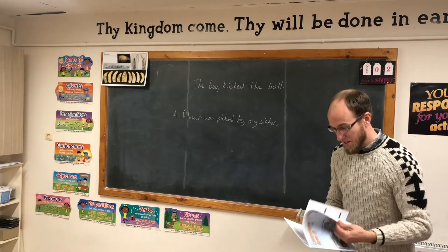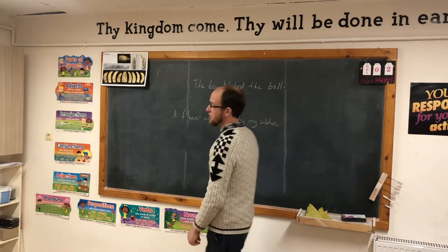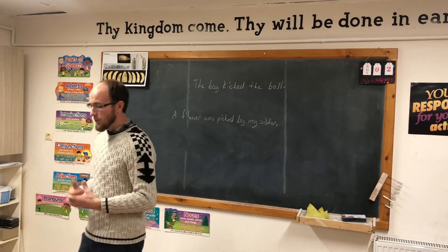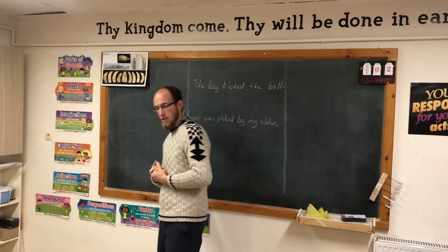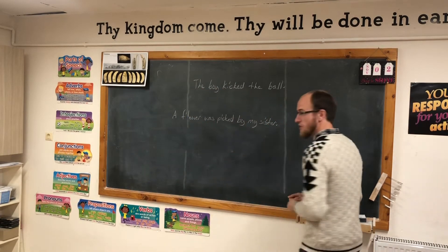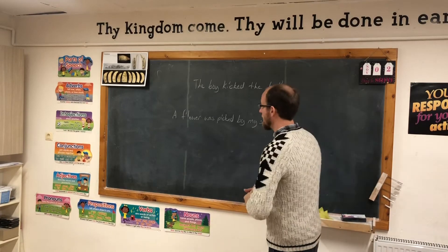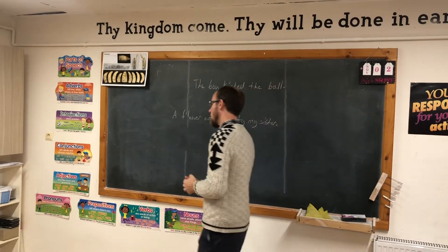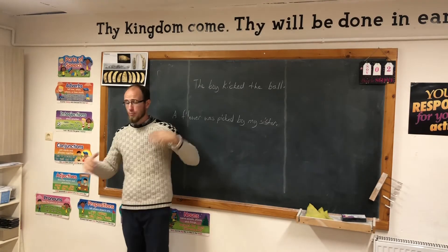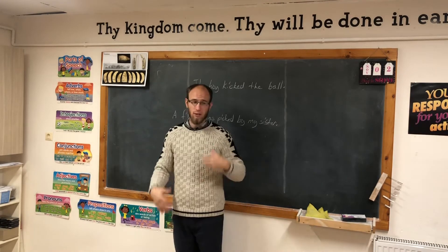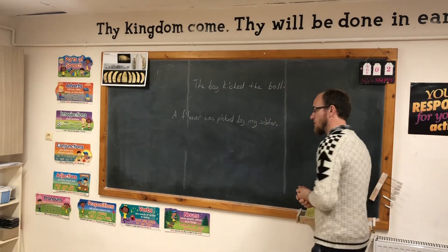Today's lesson is verbs: active voice and passive voice. Verbs have two different voices. In the active voice, the subject is doing the verb — the subject is being active. In the passive voice, the subject is receiving the action. If you're an active person, you're out doing things — jumping up and down, moving and shaking things.